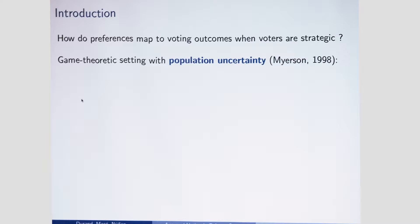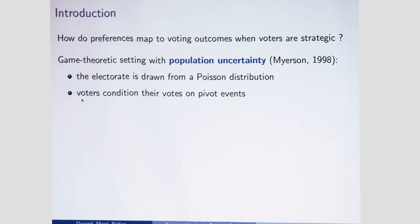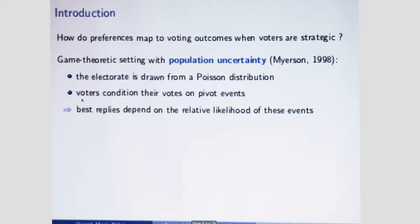The model is as follows. The electorate is drawn from a Poisson distribution. The voters condition their strategic behavior — their votes — on pivot events, which are basically ties among candidates. And the best replies depend on the relative likelihood of these events.